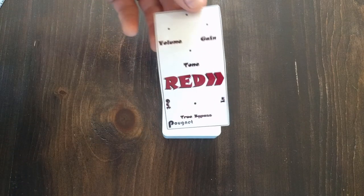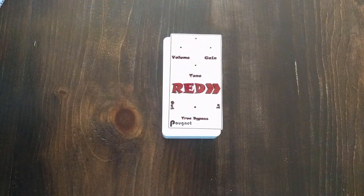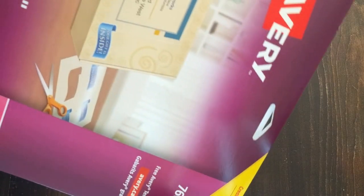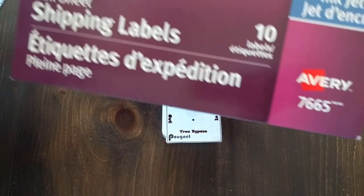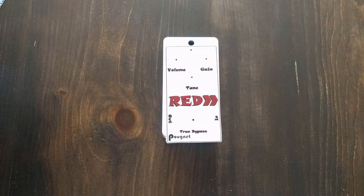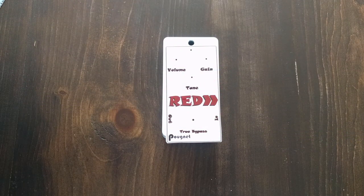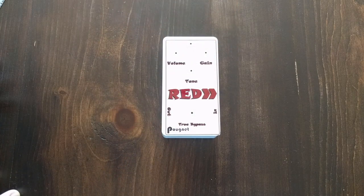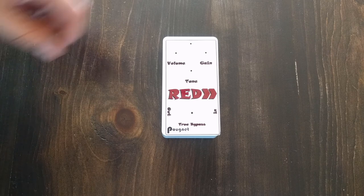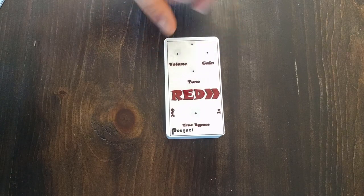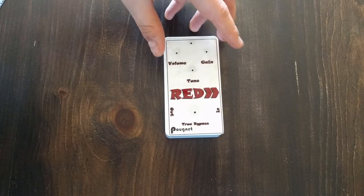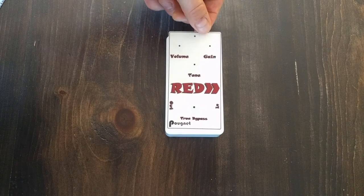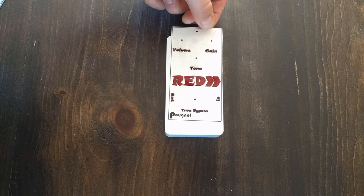So this decal here is printed out on some Avery shipping labels. I'll show you that there now, 7665 Avery shipping labels. I've got another video on this, on how I created these decals for the enclosures. I'll link that above now as well. But I've printed out my decal, I've now cut it out to size as well. And I'm going to just take you quickly through the process of how to cleanly get this on your enclosure.